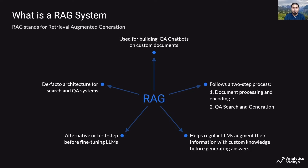The first step is where you have your own custom data. You process these documents, encode them, and convert them into embeddings. The second step is where you use this knowledge and augment a large language model's existing knowledge base — this is where you do question answering, search, and generation of a response to your question.